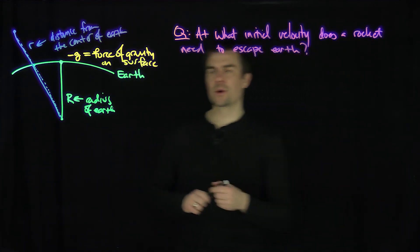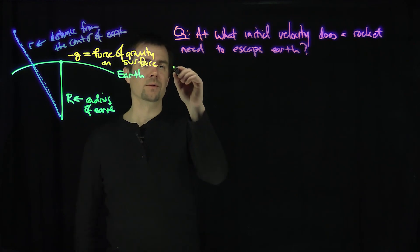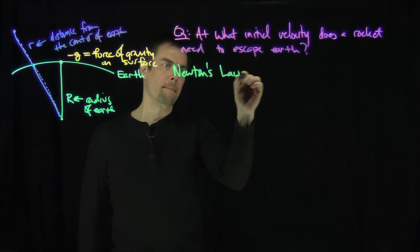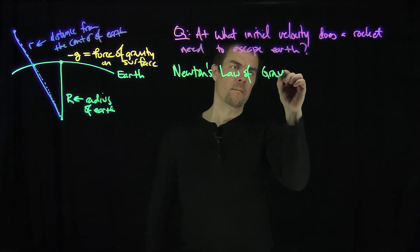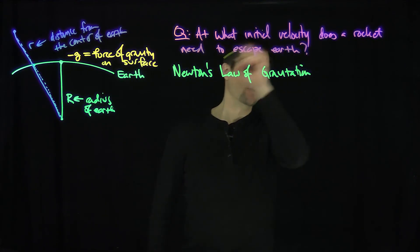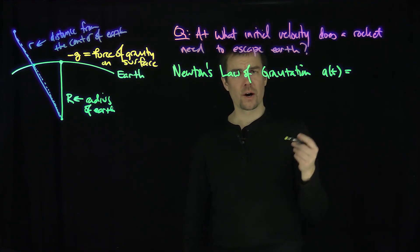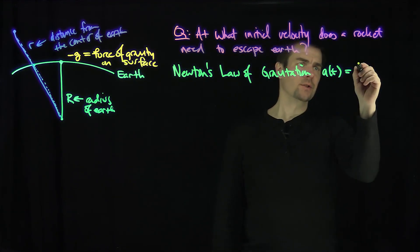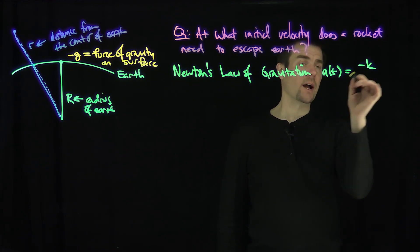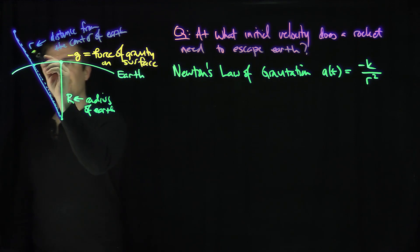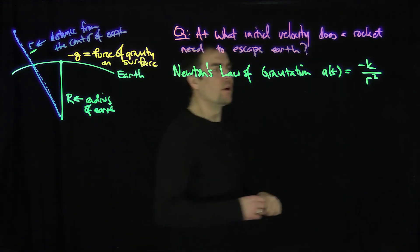So here's the setup of the problem. Newton's law of gravitation states that the acceleration, a(t), is proportional to the square of the reciprocal of the radius. So that's going to be negative k, a constant of proportionality, over r squared, where this is our distance from the center of the body.